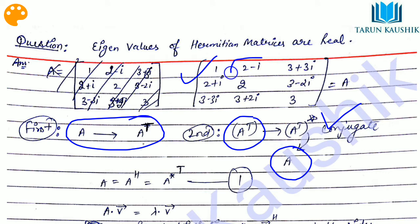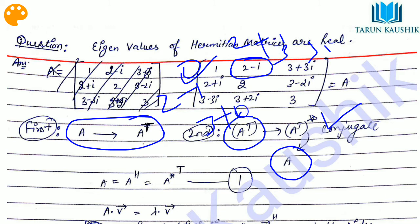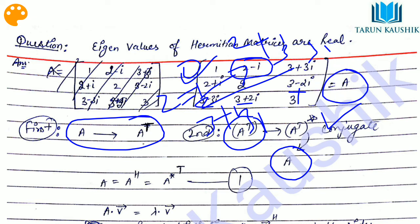For example, if I take the conjugate of this matrix: minus I becomes plus I, so it becomes 2 plus I; this becomes 3 minus 3i; this becomes 2 minus I; this becomes 3 plus 3i; and minus 2i becomes plus 2i. After doing the conjugate and then the transpose, the signs swap back to their original positions, giving us the same matrix A. So we can write A equals A Hermitian.